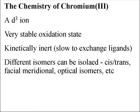Next is chromium(III), which is a d³ ion. This is a very stable oxidation state for chromium. It is kinetically inert, meaning it is slow to exchange ligands. As a result, different isomers can be isolated: cis-trans, facial-meridional, optical isomers, and so forth. Consequently, chromium(III) compounds have been widely studied.